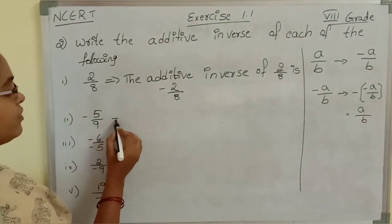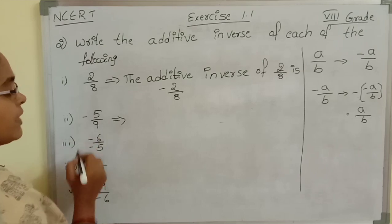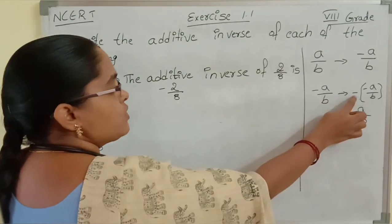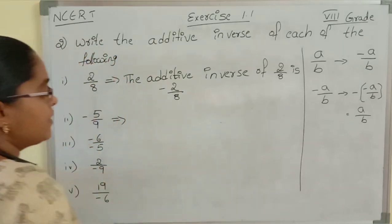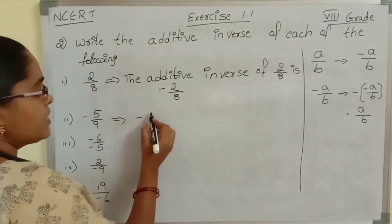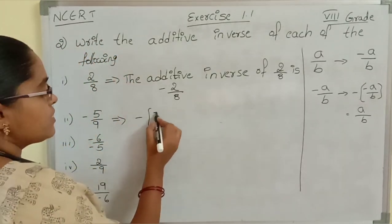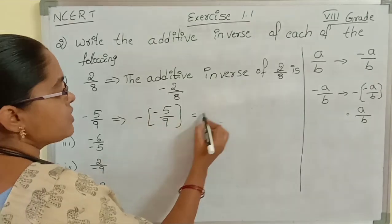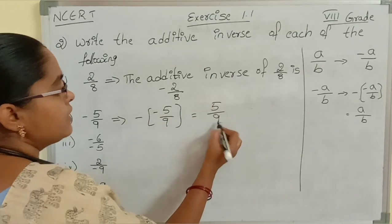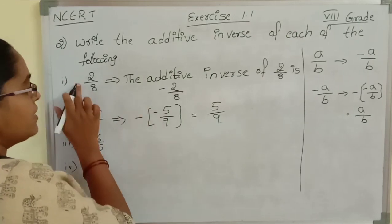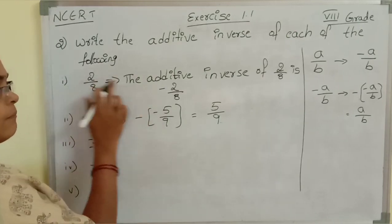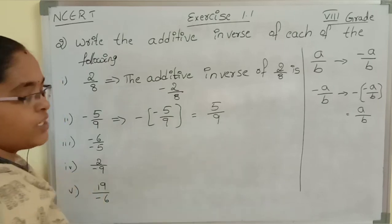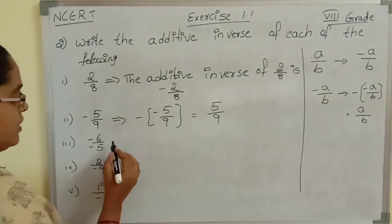Now see here: what is the additive inverse of minus 5 by 9? Since it is minus a by b, the additive inverse is minus of minus 5 by 9, which is nothing but plus 5 by 9. Just we need to change the sign — if it is plus, we write minus; if it is minus, we write the positive sign.